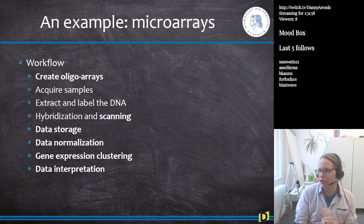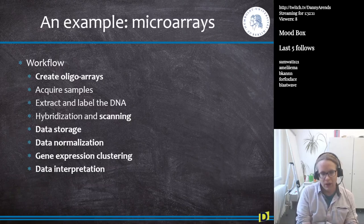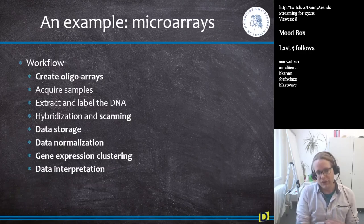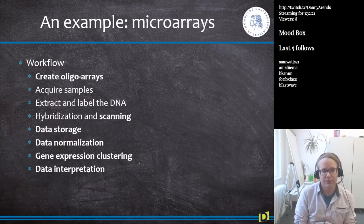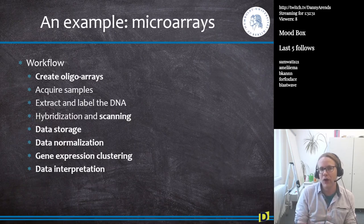The acquiring of samples is generally done either in a mouse house or in a greenhouse, where biologists do their experiments and extract their samples. They extract and label the DNA from the samples they collected. This is then hybridized to one of the designed microarrays, and then scanning occurs. Already at the scanning point, bioinformatics starts becoming more important, because you need to know how the dyes are reacting to the different lasers.